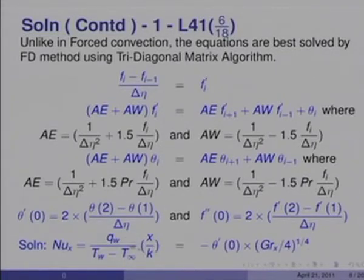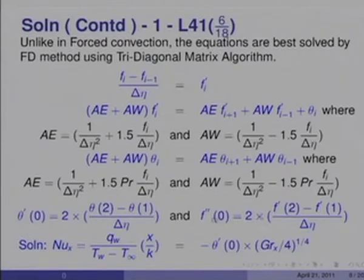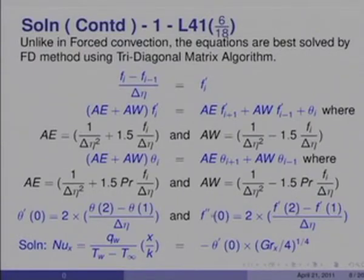The local Nusselt number is Nu_x/(Gr_x/4)^(1/4) = −θ'(0). Once we have solved the temperature and velocity distributions, we can readily obtain the Nusselt number as well as the skin friction. In natural convection, skin friction is generally of only academic interest since there is no pumping power required, and it simply represents the velocity gradient at the wall.